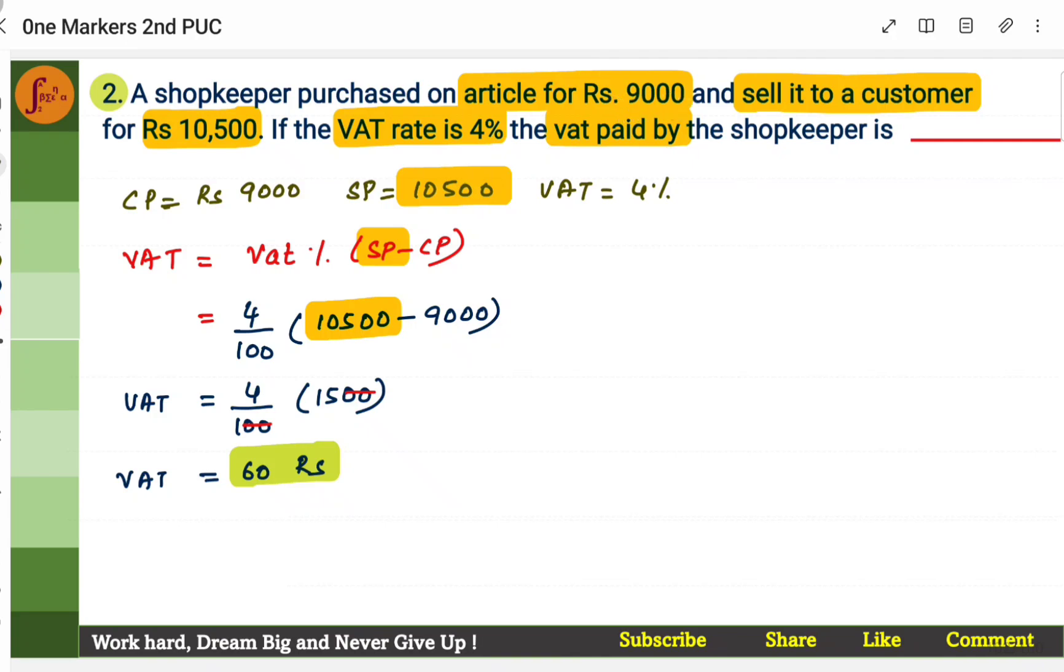And then he is purchasing it at Rs. 9000. So cost price is Rs. 9000. And the VAT percent is 4%. So 4 by 100. So when you simplify, you will get VAT as Rs. 60. So he needs to pay Rs. 60.